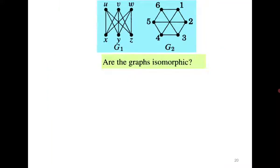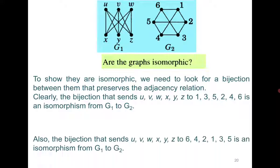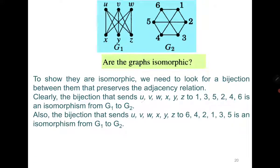Let us consider one more example. Are the following graphs isomorphic? We either need to show a connection in G1 not present in G2, or that the degree sequences differ, or some other distinguishing property — or, if everything looks similar, we propose a bijection. The bijection is not unique. For this example, two bijections are: UVWXYZ → 135246, and UVWXYZ → 642135. Since a bijection exists, both graphs are isomorphic.